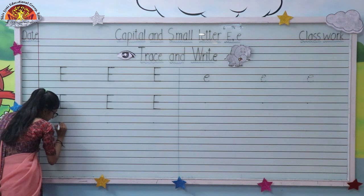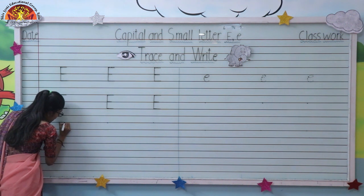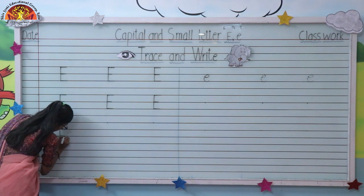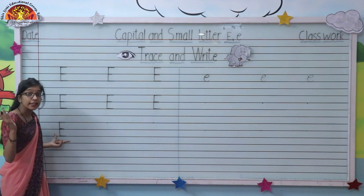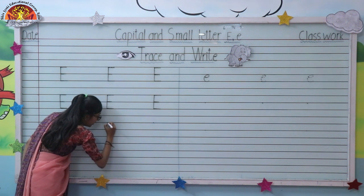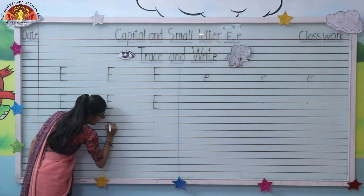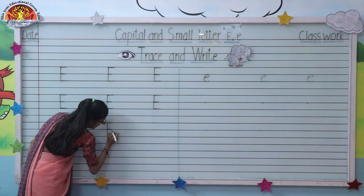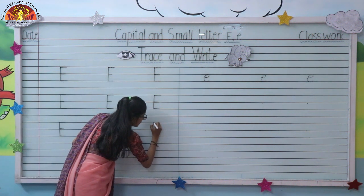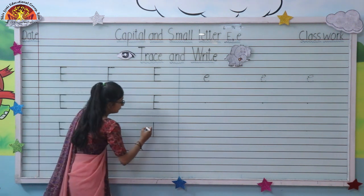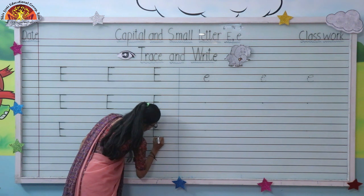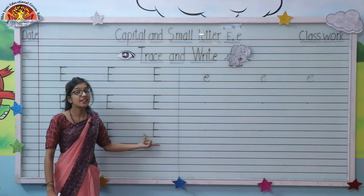Again, make one standing line. Sleeping line, small sleeping line, one more sleeping line. Capital letter E. One more time — standing line, sleeping line, small sleeping line, one more sleeping line. Capital letter E. One last time: standing line, touch the lines properly, sleeping line, small sleeping line, one more sleeping line here. Capital letter E.